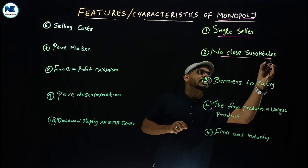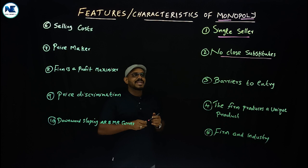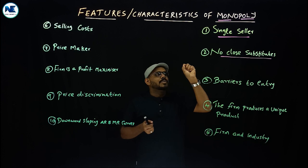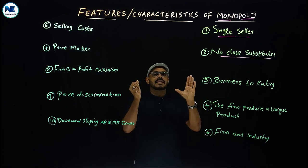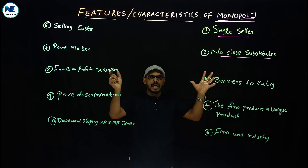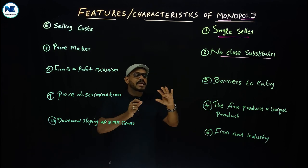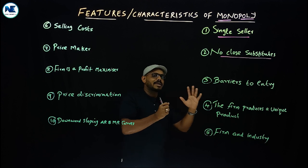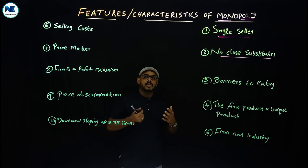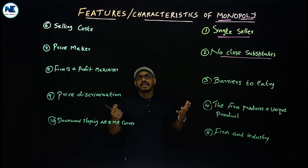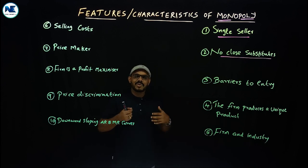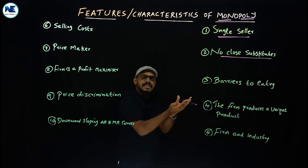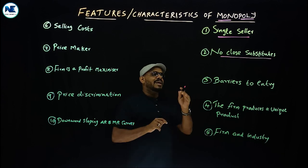The second feature is no close substitutes. As discussed in the previous video on the definition of monopoly, in the monopoly market there are no close substitutes. The monopolist produces a unique or identical product with no close substitutes. That is why the monopolist enjoys market control and acts as a price setter or price maker. Consumers cannot switch to substitute products in this market.